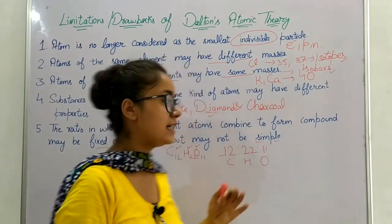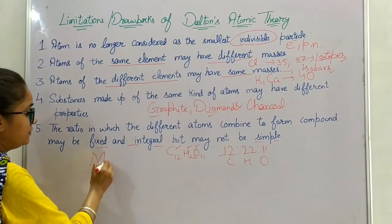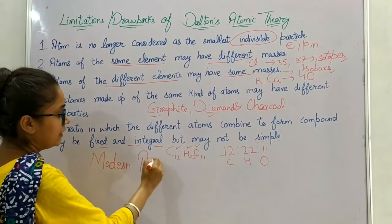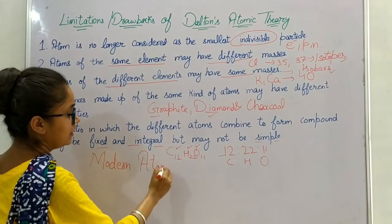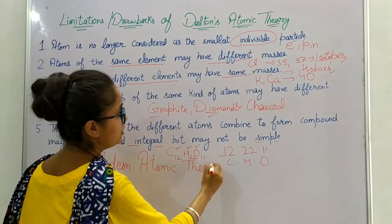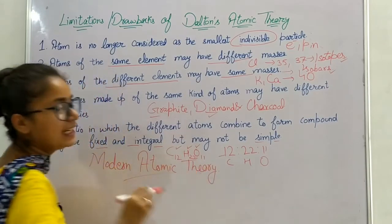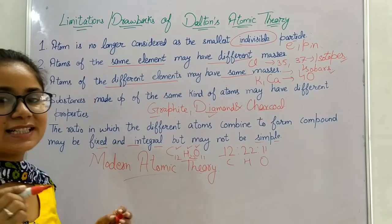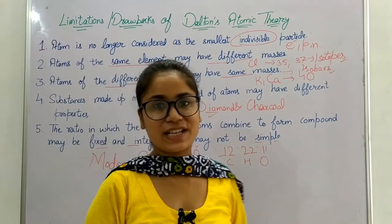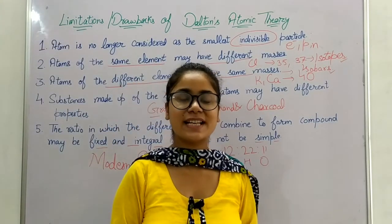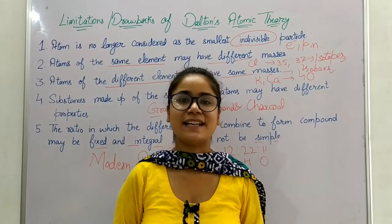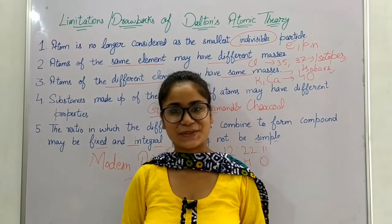These five points lead us to a new theory known as modern atomic theory. So we have studied the modern atomic theory and the limitations of Dalton's atomic theory. That's all for today's video. For more videos like this, subscribe to my channel and hit the bell icon. Thank you so much.